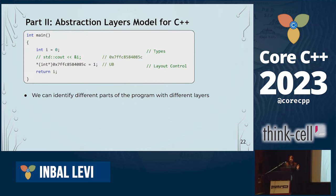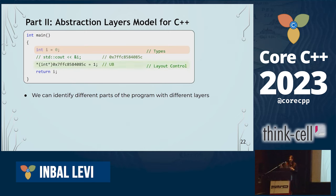Going back to the UB example, we can now use this classification to identify different parts of the program with different layers. Technically we can say this thing belongs to the types layer — we define a type. And this thing belongs to layout control. Maybe we need to be very careful when we try to do those two things in the same snippet of code.